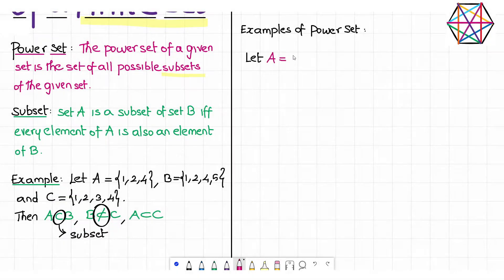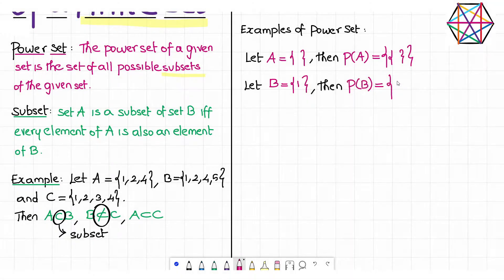Let A be empty set. Then the power set of A is the set containing empty set. This is the notation for power set, by the way. Let B be the set with element 1. Then power set of B is a set containing empty set and the set with element 1. Think about it. Empty set is subset of set B. And this set, which is B itself, is of course a subset of set B.